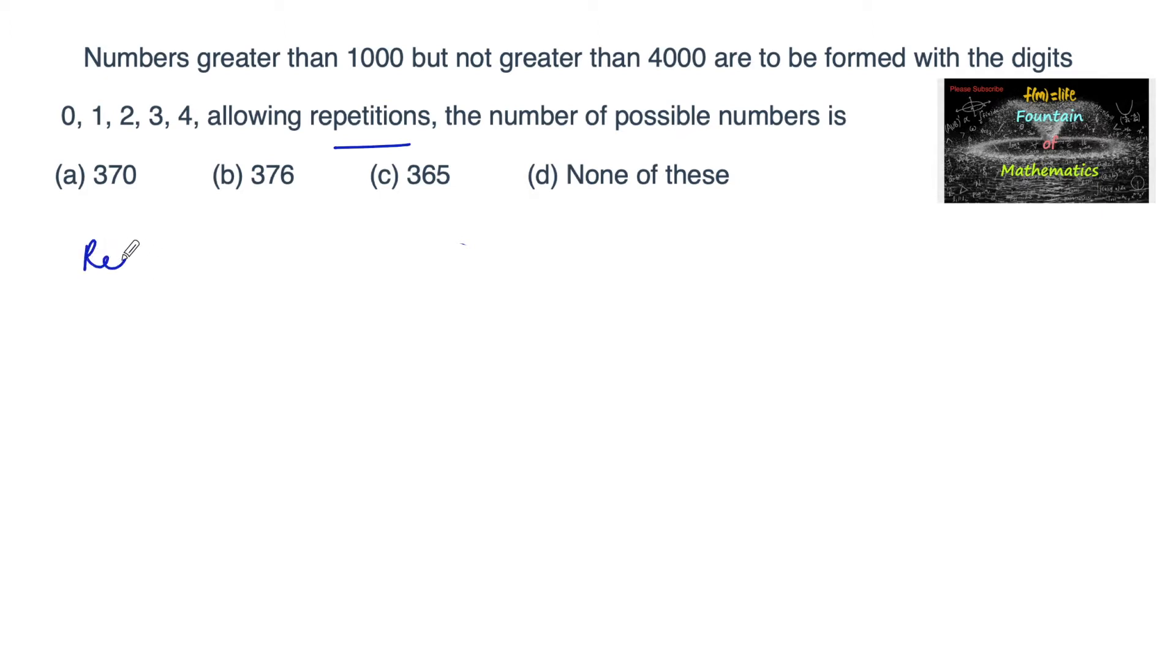So here, required numbers are more than 1000 but not greater than 4000, which means less than or equal to 4000, using the digits 0, 1, 2, 3, 4, and repetition is allowed.